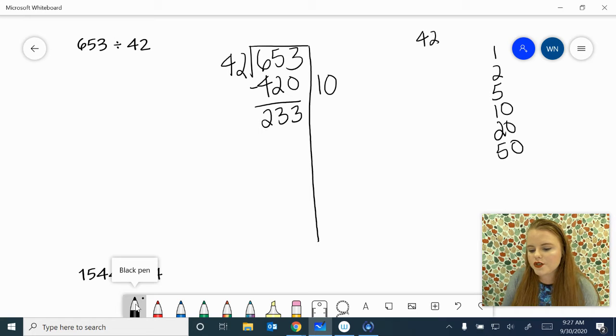So I'm going to say 42 times 5. 2 times 5 is 10. 4 times 5 is 20. Plus 1 is 21. That'll work. So my friendly number was 5. Make sure you're putting it nice and neat on the outside of your line so you can keep track of them. And 210 is what I'm going to be subtracting.